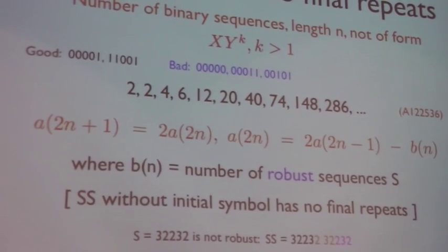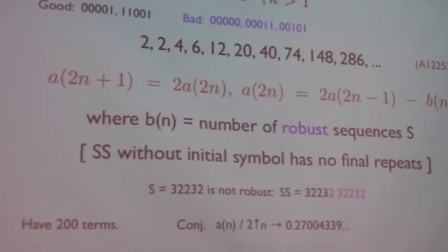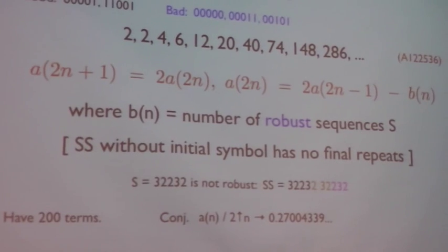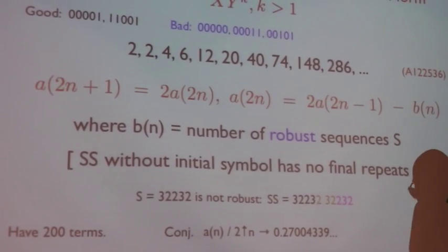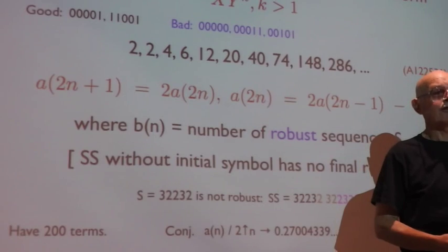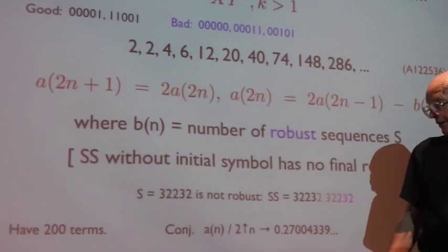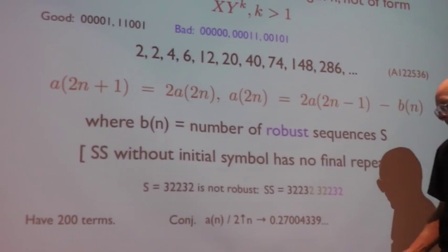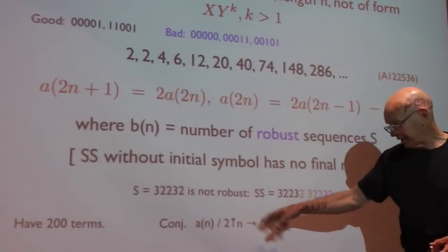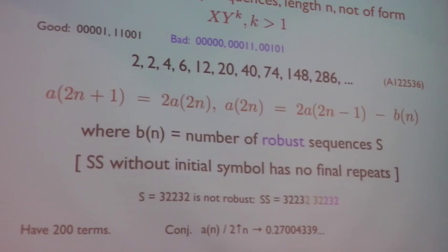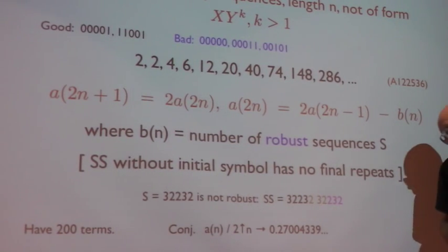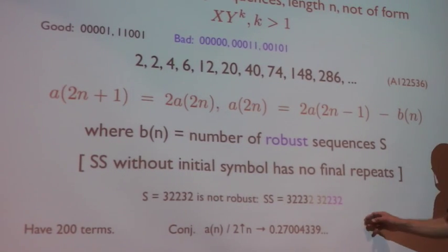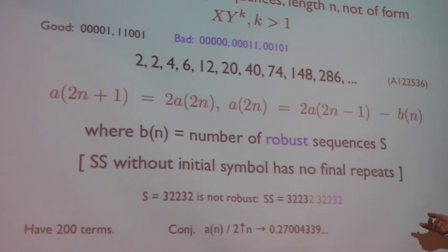Well, we have studied this quite hard and we have 200 terms which is quite a lot. To have 200 terms and not have a formula but we don't have a formula it seems tricky. We have a very strong conjecture that it grows like 0.270...0.4339... I can give you 30 decimal places times 2 to the N. but we don't even have a proof that that limit exists.